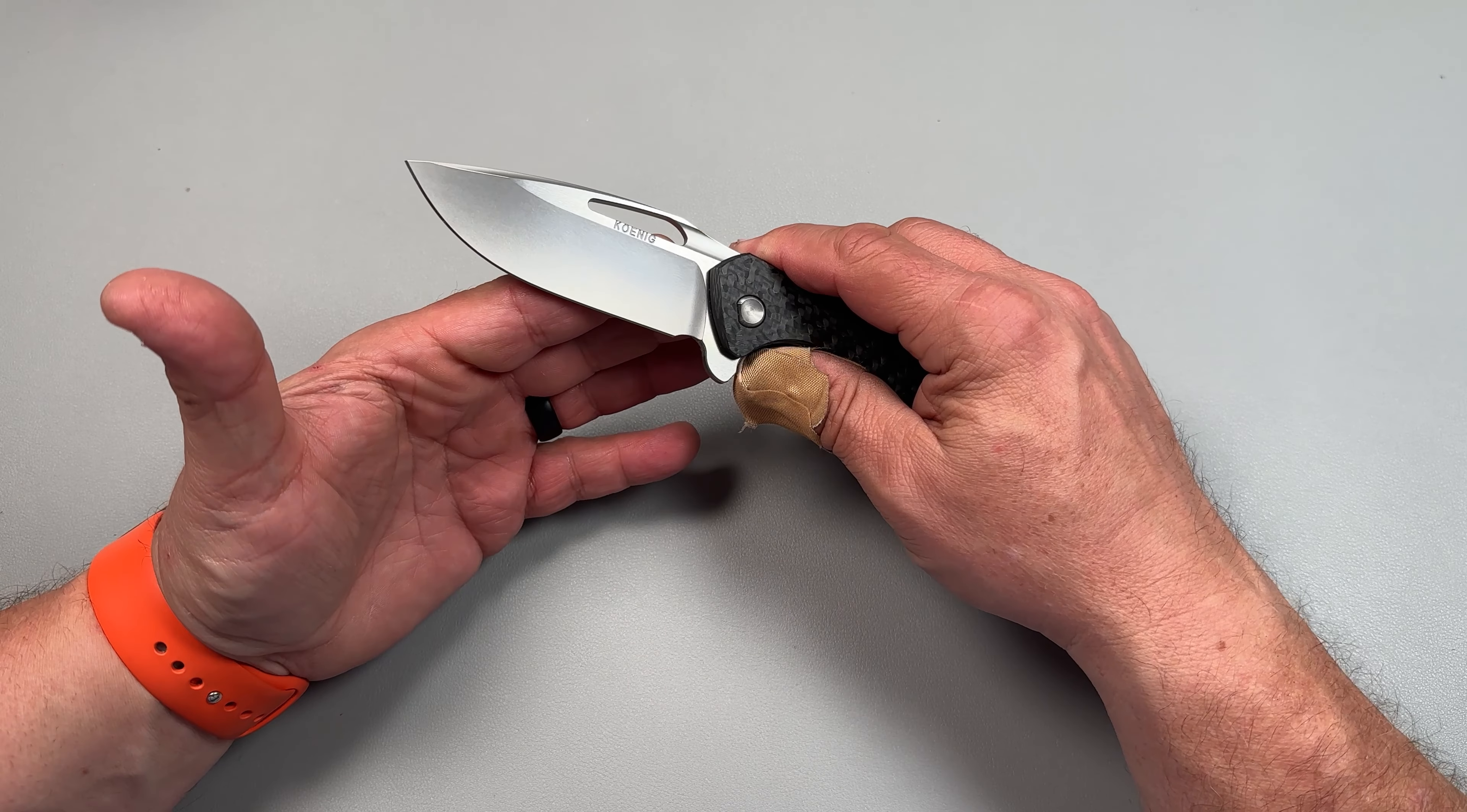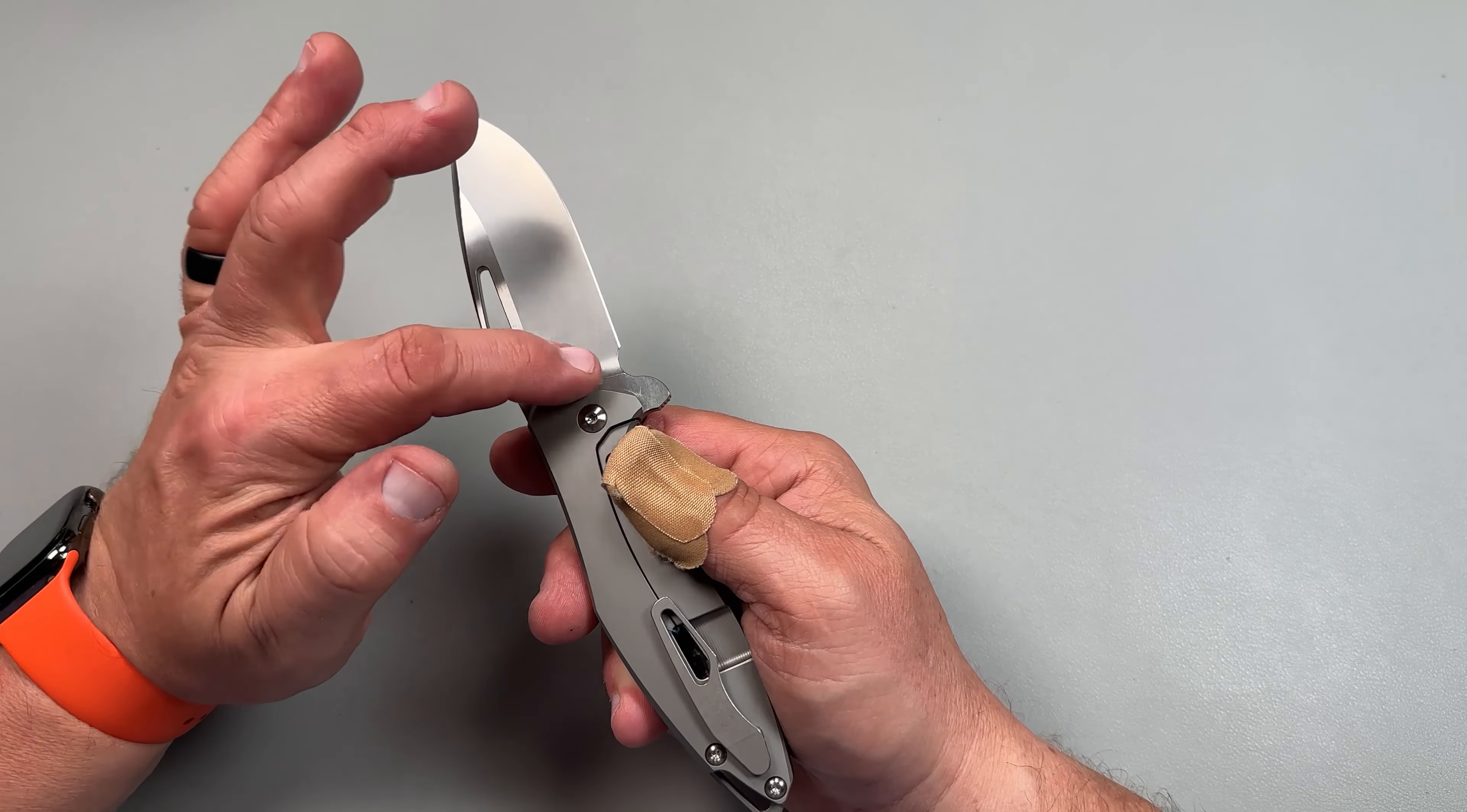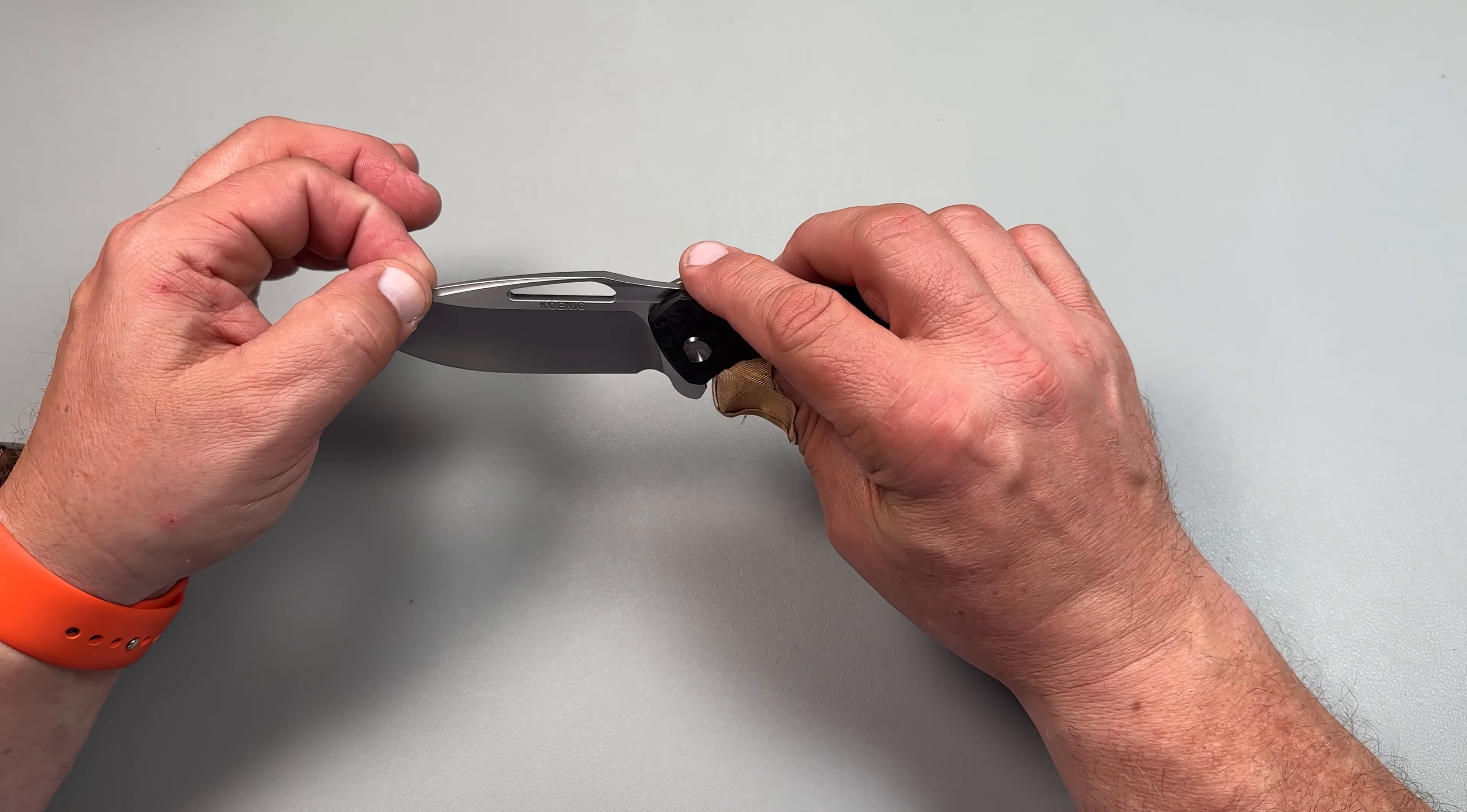This does come out to a beautiful hollow grind, a nice satin kind of pearlized finish there. This is like a pearlized kind of a bead blasted pearlized sort of mixed finish there with a nice swedge on top.